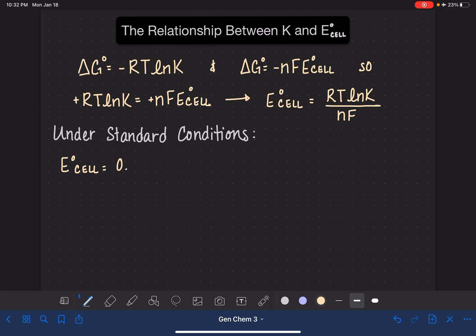0.0257 volts over N times the natural log of K. Now if you're kind of confused about what just happened, where did this come from?